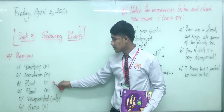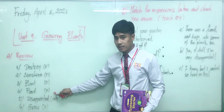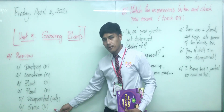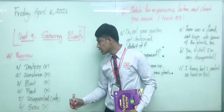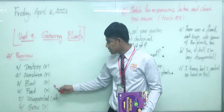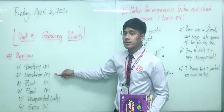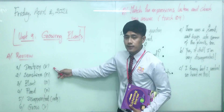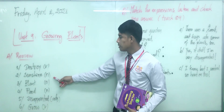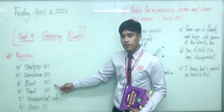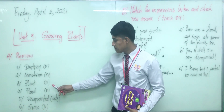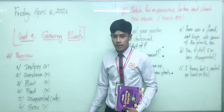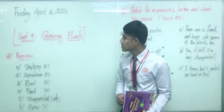Let's practice pronunciation. Repeat after me: sunshine, plant, flat, disappointed, grow, destroy. Everyone, all together — destroy, sunshine, plant, flat, disappointed, grow. Very good everyone!